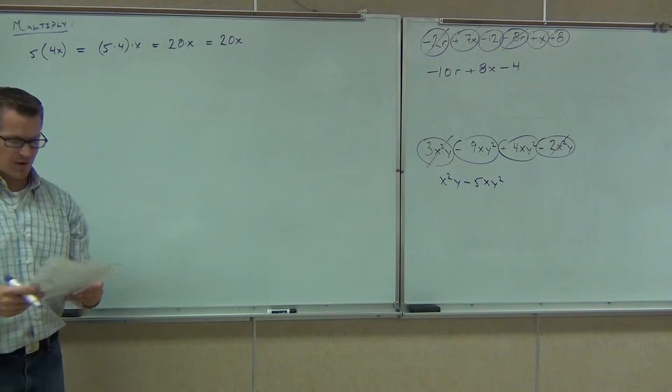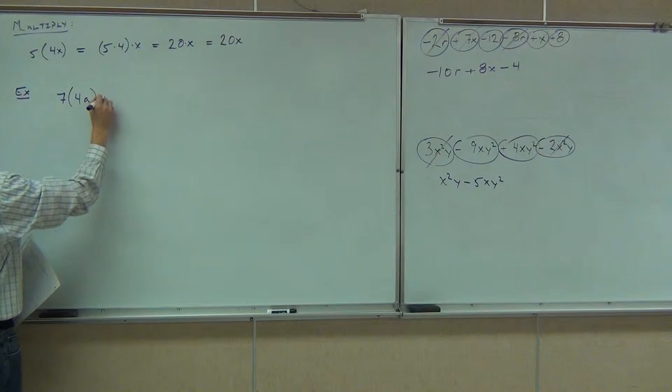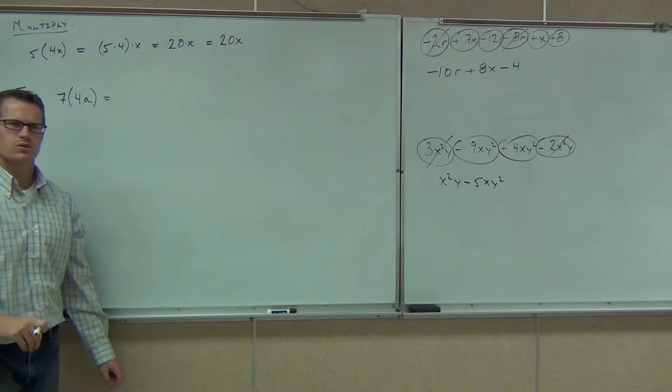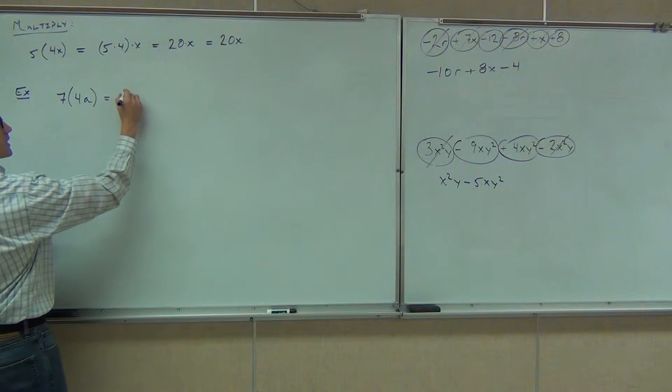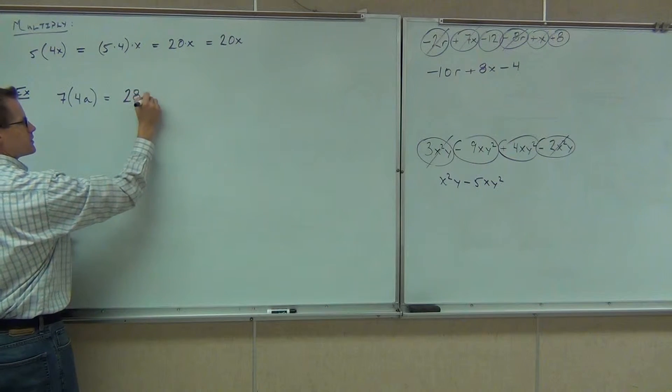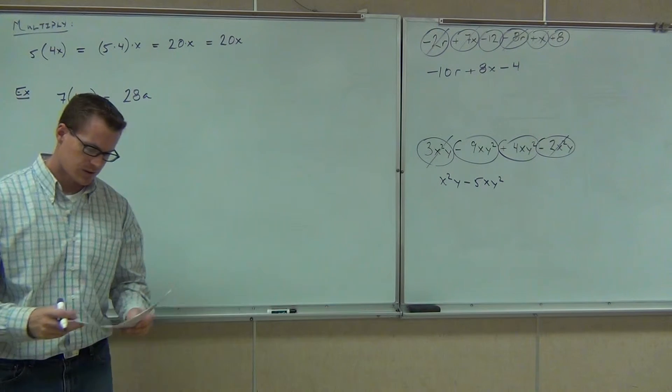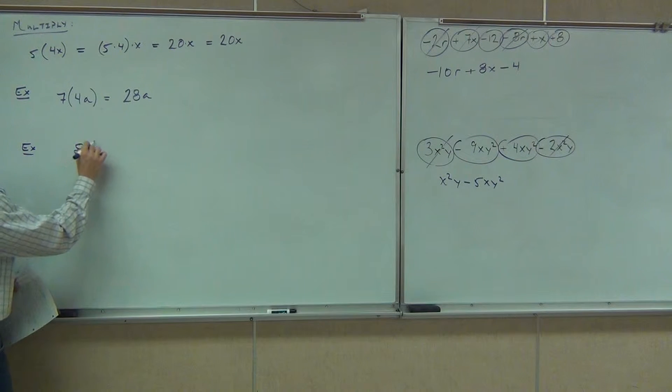Sure you can. Why can't we just say 5 times 4x? Well, that's 20x. And the answer is you can. This is the reason why you can. You can reassociate every single time. That means whenever you multiply a constant times a variable term, all you have to do is multiply the coefficient. You with me on this? Let's do a couple more. Let's try this one. 7 times 4a. How much do you think that's going to be? 28. Good. The a's not going to change. We're just going to have 28a. We multiply that constant times that variable, specifically the coefficient.